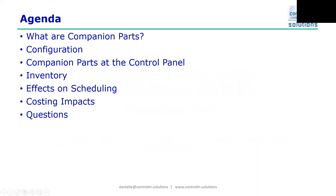Today we will start with a discussion on what companion parts are and how they differ from multi-outs and when they should be used. We'll review the configuration and setup of companion parts within PLEX, then show how to use companion parts at the control panel. From there we'll discuss companion part inventory, the effects on scheduling, costing impacts, and then we'll open the floor for questions.